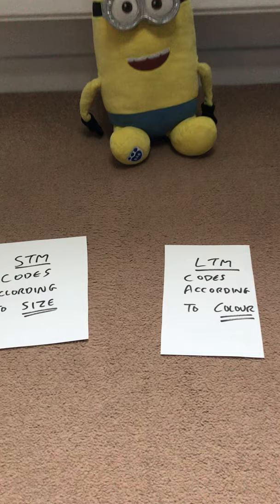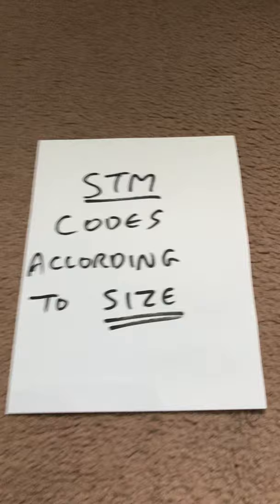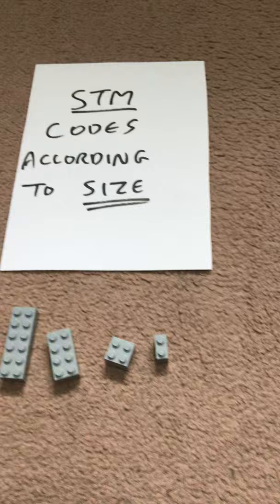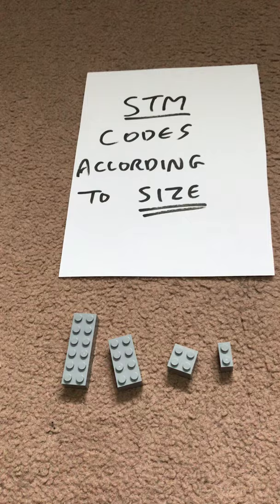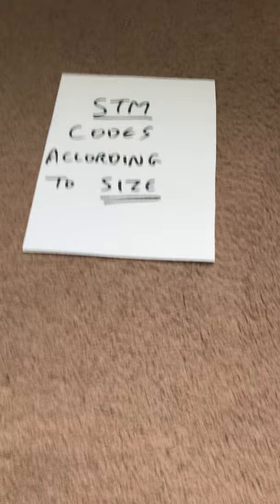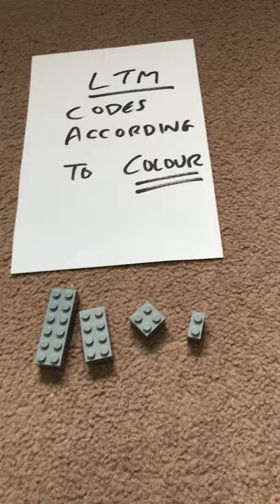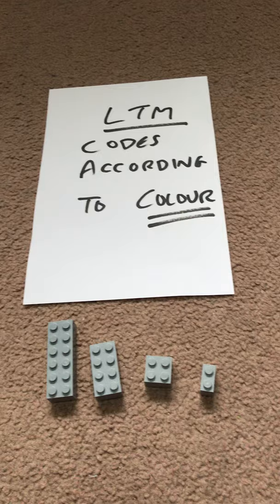So here goes — let's say short-term memory codes according to size, and long-term memory codes according to color. So let's do a short-term memory task with Lego bricks of different sizes. Because they're all different, that's fine — it won't make mistakes. Long-term memory codes according to color, and oh dear, it's going to get confused and start to make mistakes. So making mistakes when they're all a similar color supports the idea that long-term memory is coded that way.